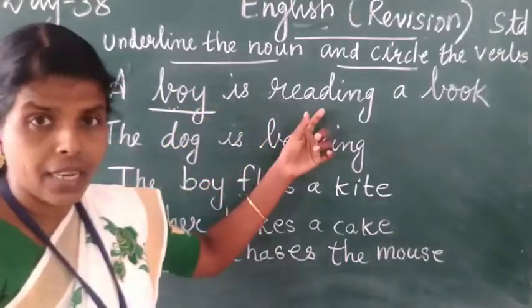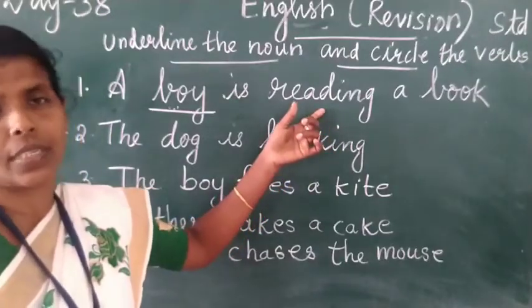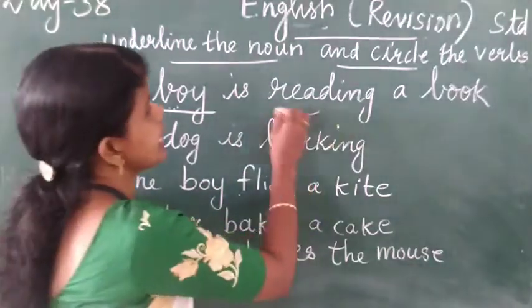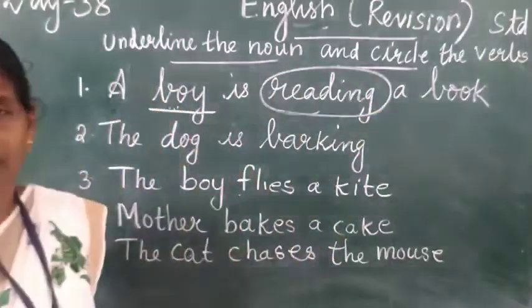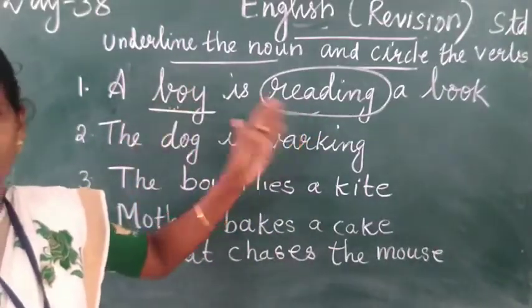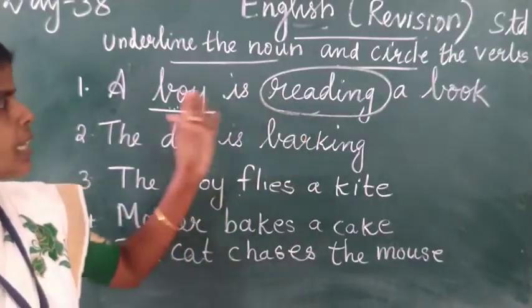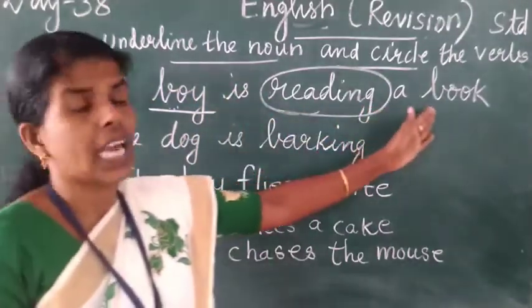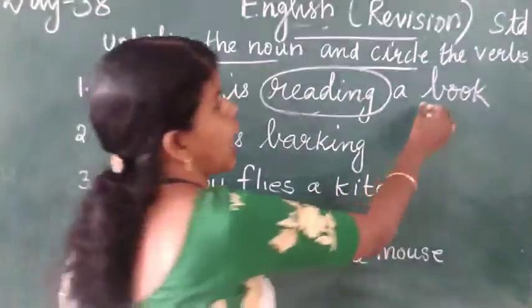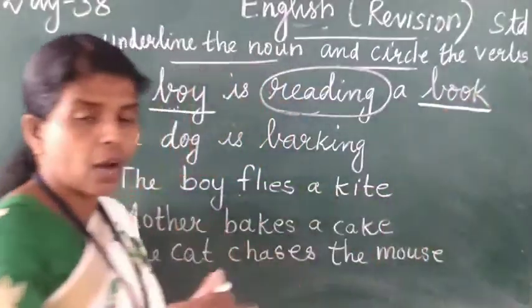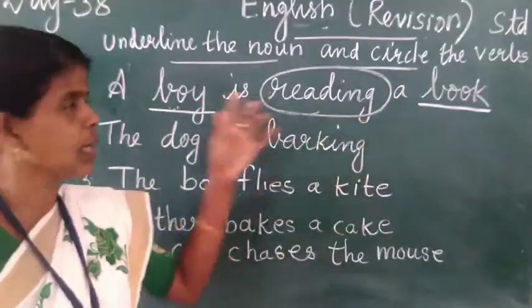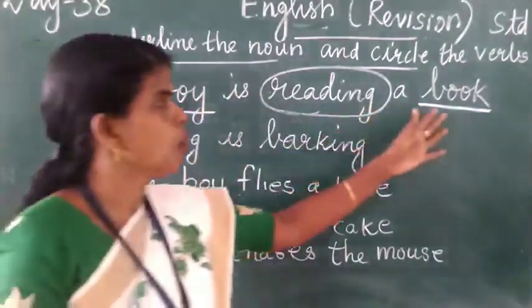A boy is reading. Reading is the action word, so that is the verb. A boy is reading a book. Book is the name of a thing, so that is a noun. So in the sentence: boy and book are nouns, and reading is the action word — that is the verb.